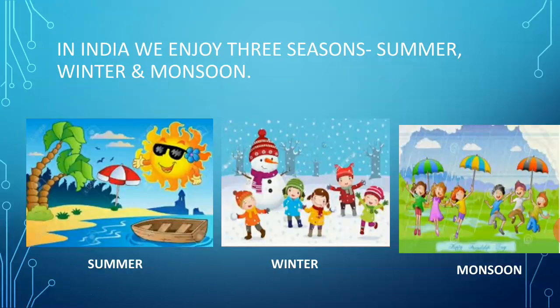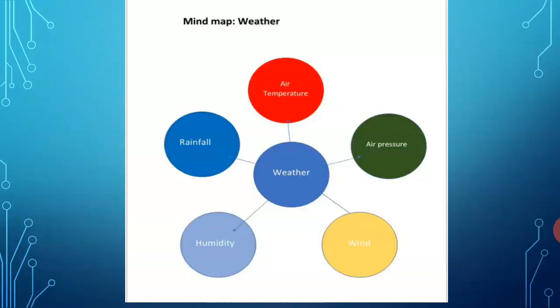Our lifestyle varies according to seasons. It influences what we eat, what we wear, and even the type of houses we live in. It also determines the crops that farmers grow. Now let's see a mind map related to weather. Weather consists of: air temperature, air pressure, wind, humidity, and rainfall.